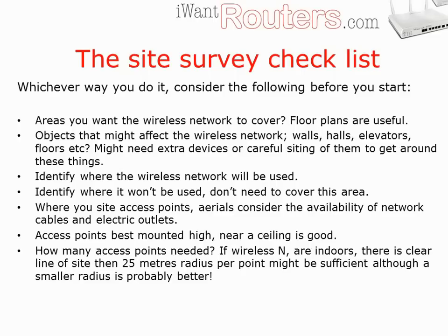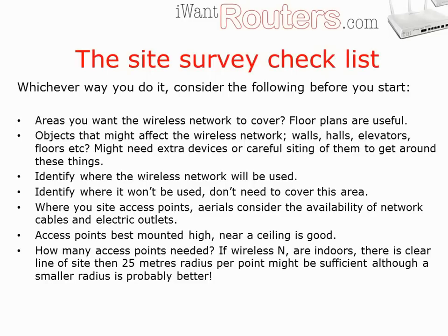Whichever way you do it, please consider the following before you start. What are the areas you want the wireless network to cover? A floor plan would be really helpful. Identify the objects that might affect the wireless network, such as walls, halls, elevators and floors — you might need some extra devices or careful sighting of them to get around these things. Identify where the wireless network will be used and where it won't be used, as you don't need to cover those areas. Depending on where you want to site the access points or aerials, consider where any network or mains cables need to run, and whether mains outlets are available where you need them.